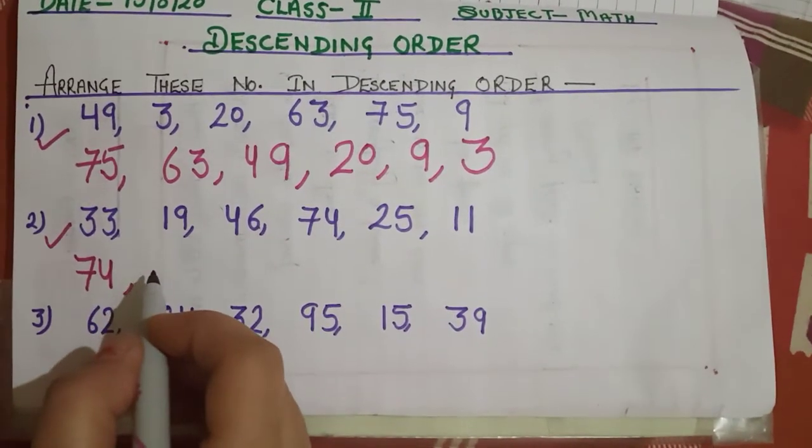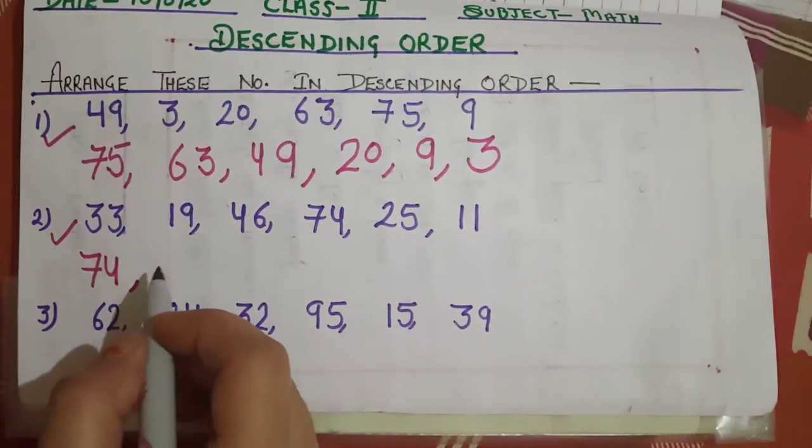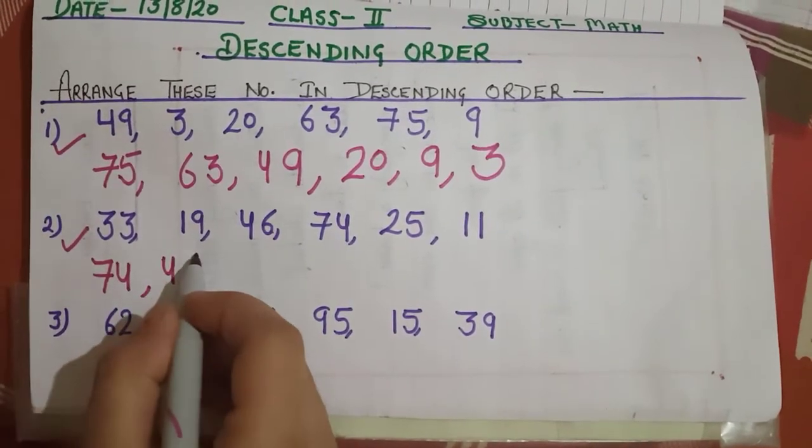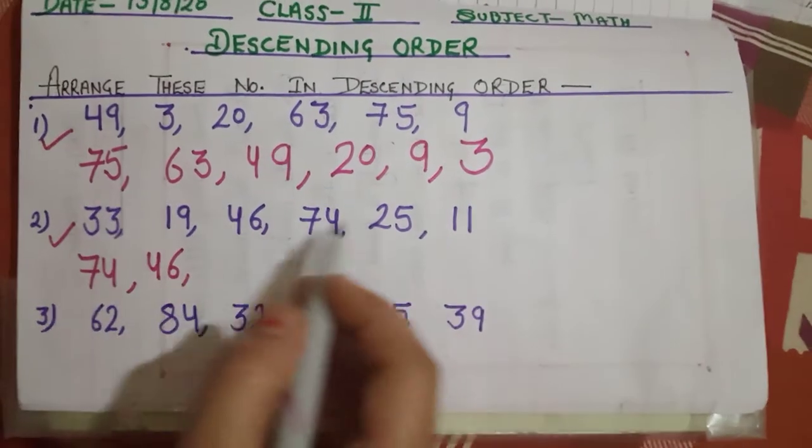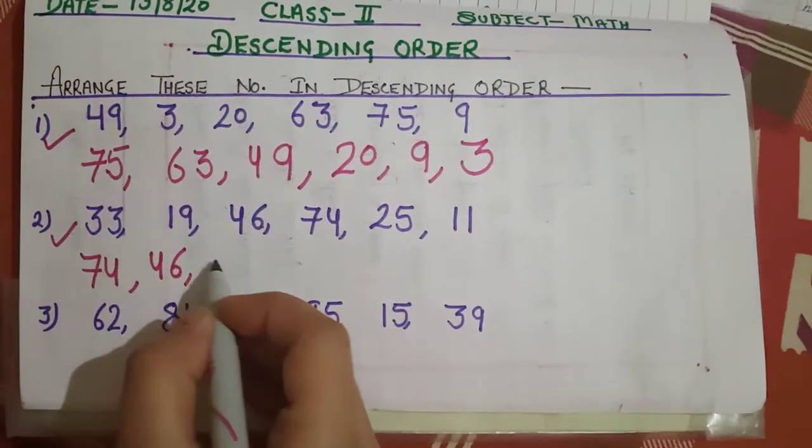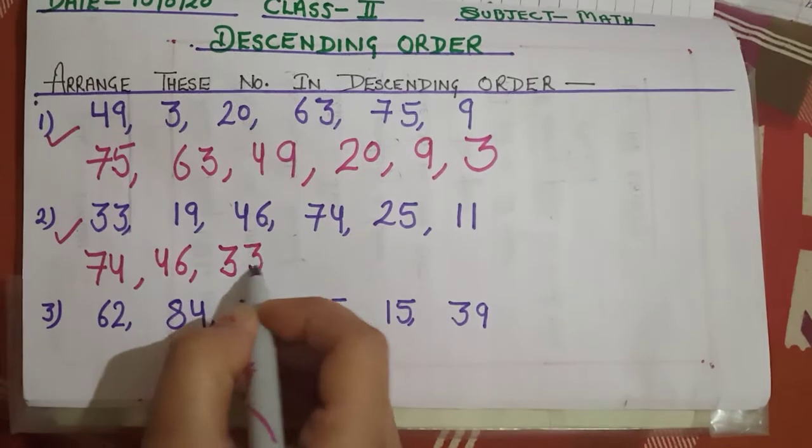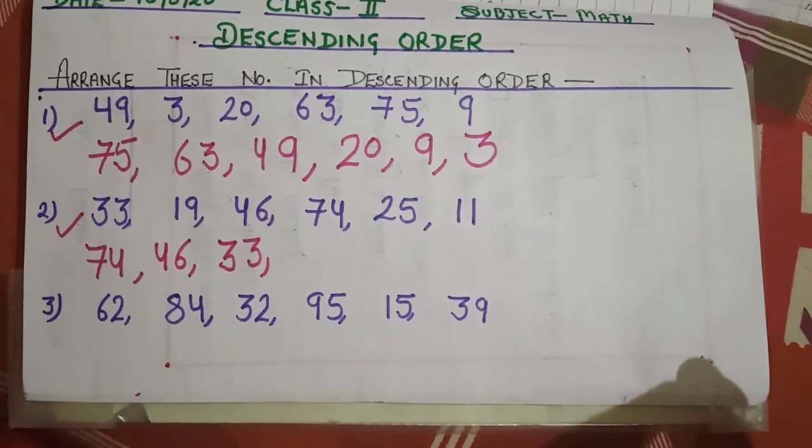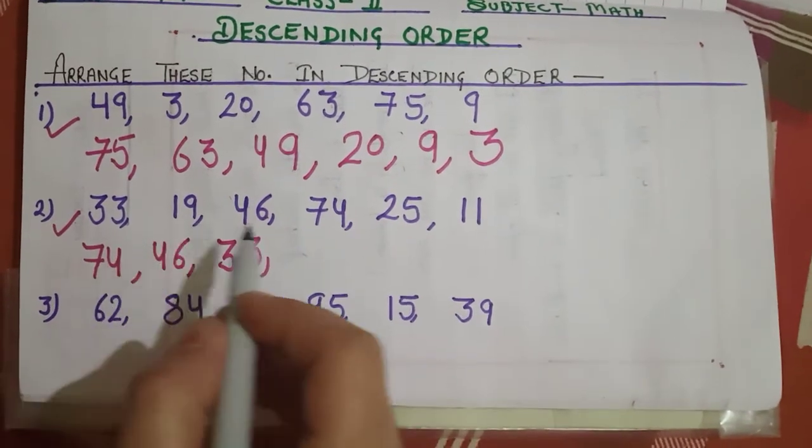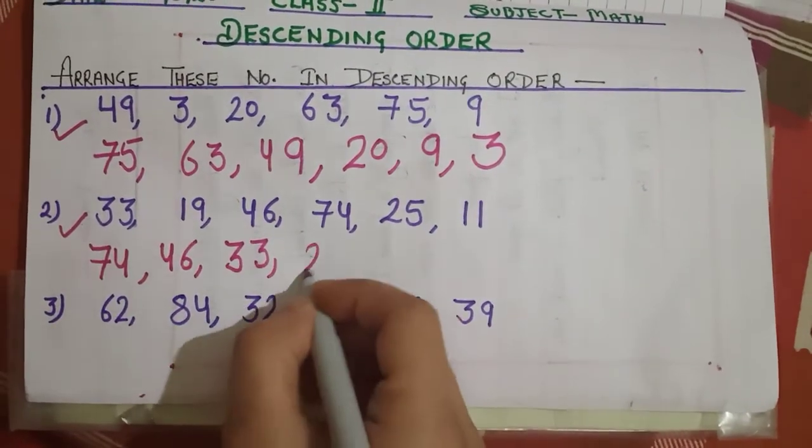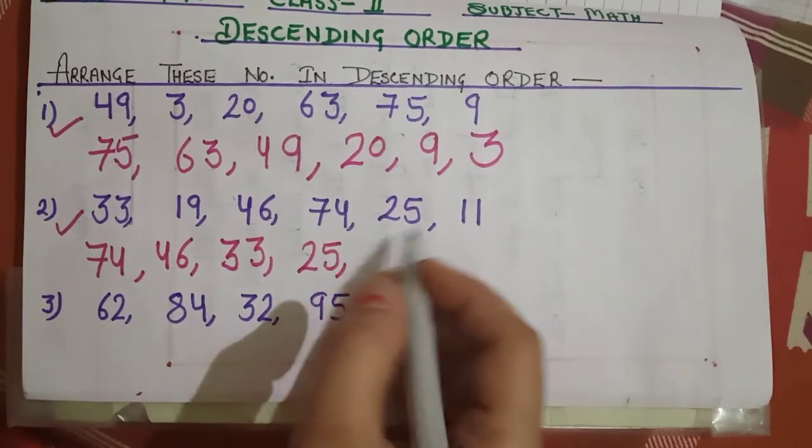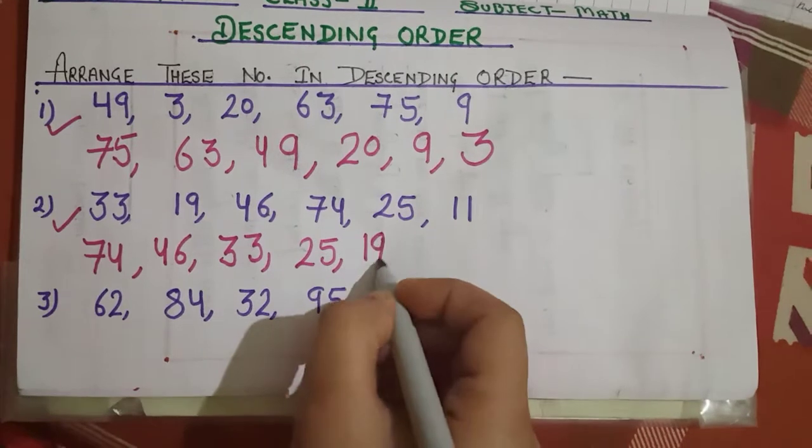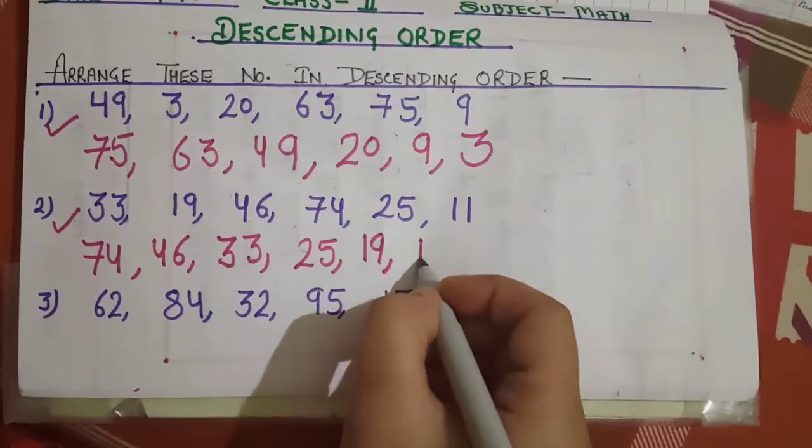And which number will come after 74? Yes, 46. Then after 46? Yes, 33. And which number will come after 33? 25. Then after 25? Yes, 19. And the last number is 11.